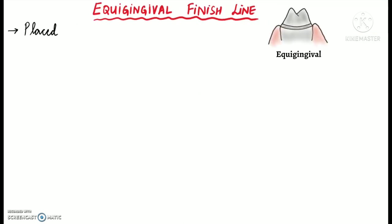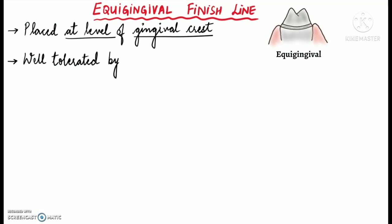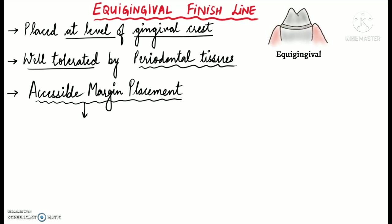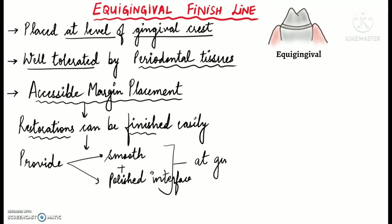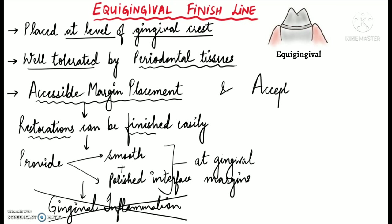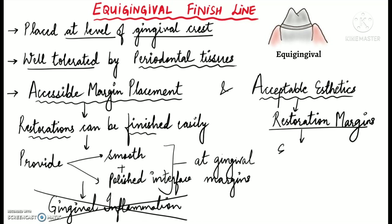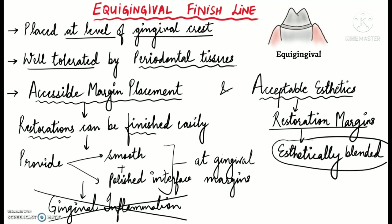Now let's talk about equi-gingival finish lines. An equi-gingival finish line is placed at the level of the gingival crest, and as per the literature it is well tolerated by the periodontal tissues. It is considered positively due to its accessible margin placement, because restorations can be finished easily to provide a smooth and polished interface at the gingival margin, resulting in almost negligible gingival inflammation. It also provides acceptable aesthetics as the restoration margins can be aesthetically blended very easily.